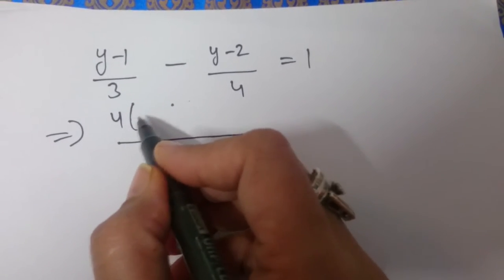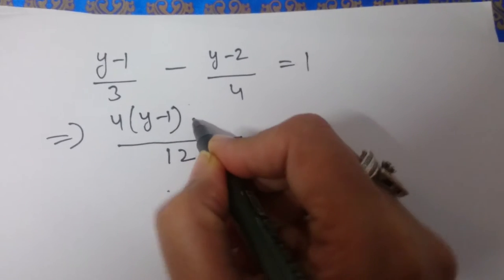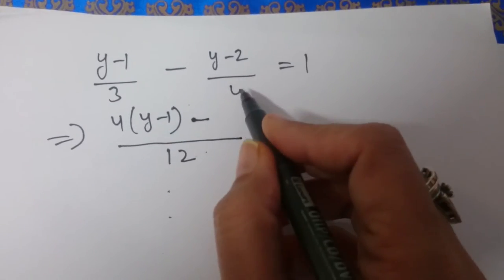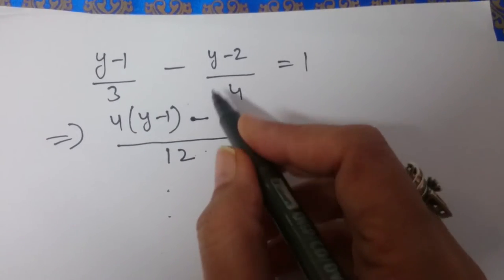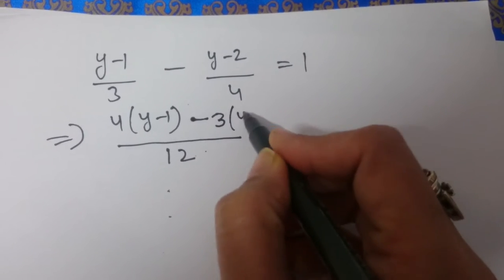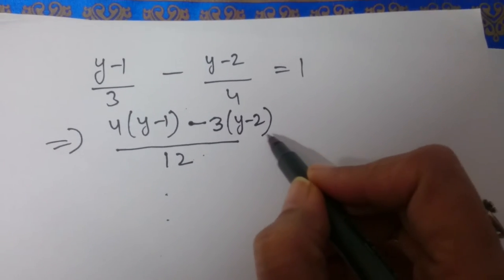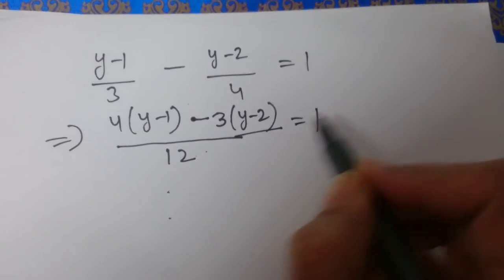So we have in the numerator 4 into (y-1), put this minus sign, and 4 threes are 12, so 3 into (y-2). This is equal to 1.